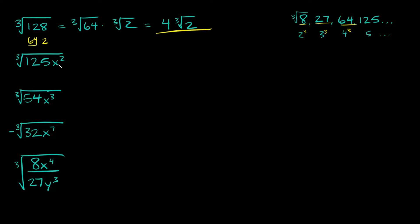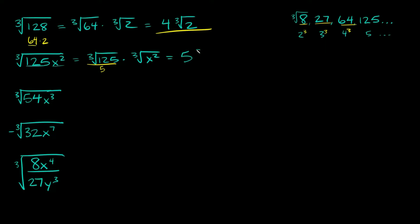The next one has some variables in it: the cube root of 125x squared. 125 just happens to be a perfect cube. When you have a number and variables, you want to break those into two separate cube roots. So this is going to be equal to the cube root of 125 times the cube root of x squared. And again, 125 is a perfect cube — it's just equal to 5. So we have 5 times the cube root of x squared.